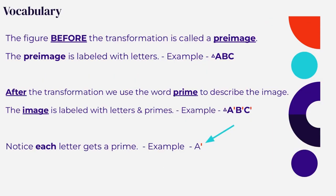Here's a summary of our vocabulary. The figure before the transformation is called a pre-image. The pre-image is labeled with letters — for example, triangle ABC. After the transformation, we use the word prime to describe the image. The image is labeled with letters and primes — for example, triangle A prime, B prime, C prime. Prime looks like an apostrophe symbol, but it's straight up and down. Notice each letter gets a prime.